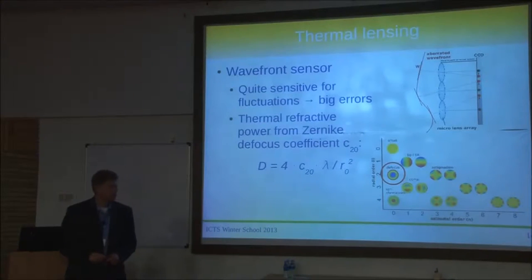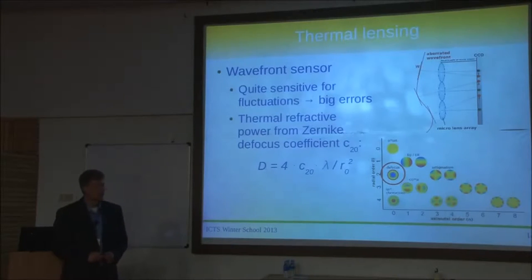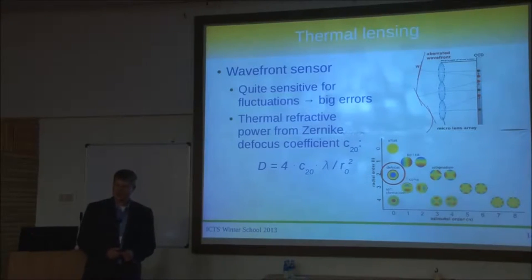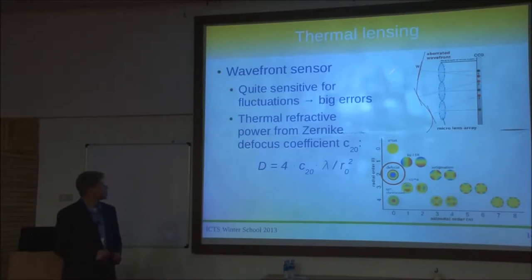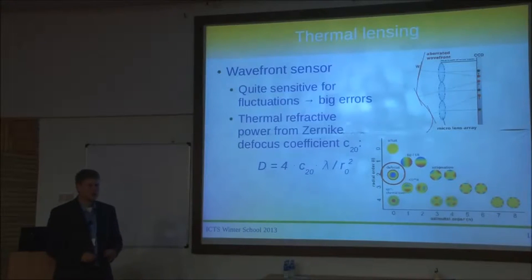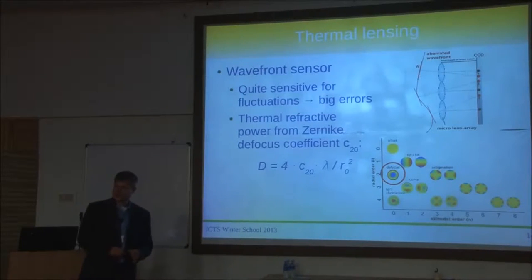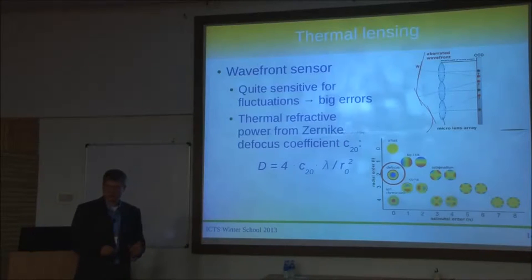Another method is to use a wavefront sensor. The basic setup is a CCD chip with a lenslet array in front of it. Each point on the CCD array is correlated to one of these lenslets, each with a certain focal length, creating a spot. If a shaped wavefront comes in at some angle, it causes a displacement of these spots, which can be monitored. You then try to describe the wavefront with a bunch of polynomials — specifically a complete orthogonal set of components.